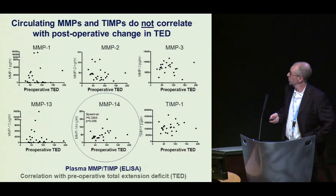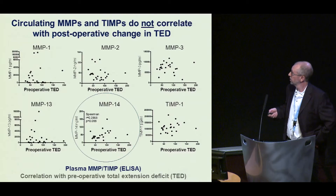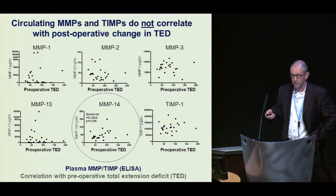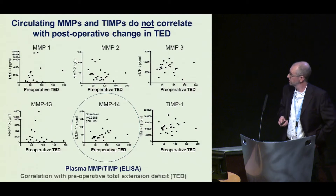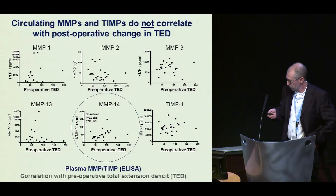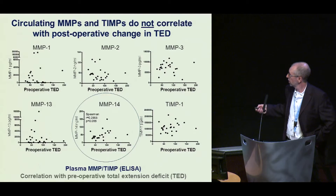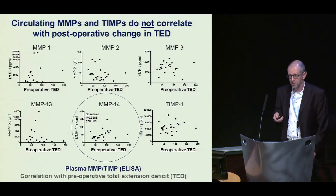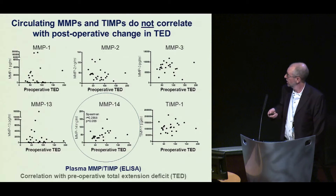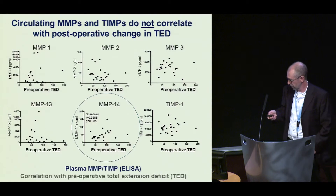Nevertheless, we went on to measure the circulating levels of a number of these markers and compare them with measures of change in total extension deficit. Disappointingly, though the early data looked promising, in the end we don't see a correlation between the post-operative recurrence phase and the expression of any of these markers. However, for MMP14, a collagen-degrading enzyme, we do see a correlation with pre-operative total extension deficit, and that may be telling us something about its role in the disease process, which we and others have discussed before.